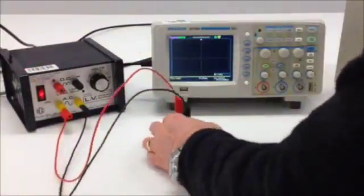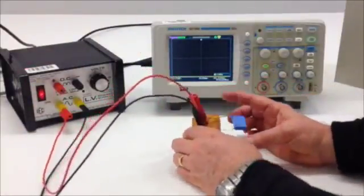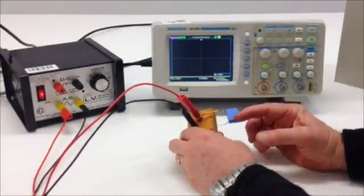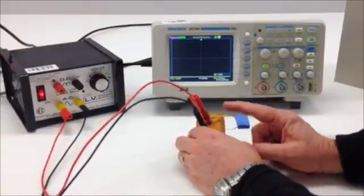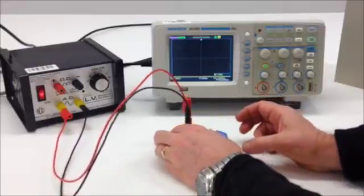And essentially what we have here now is a circuit where the voltage comes from the power supply, across the resistor, across the capacitor, across the resistor and back to the power supply. So there is current flow through that circuit.